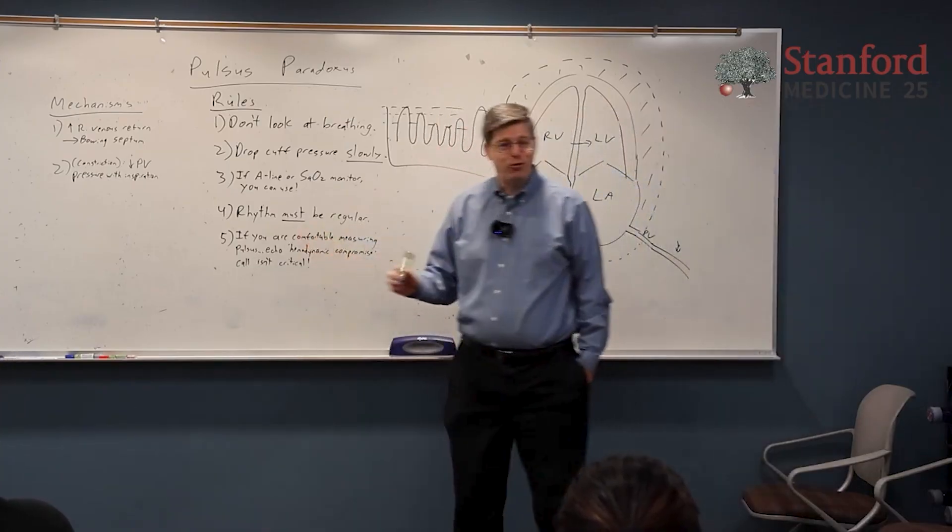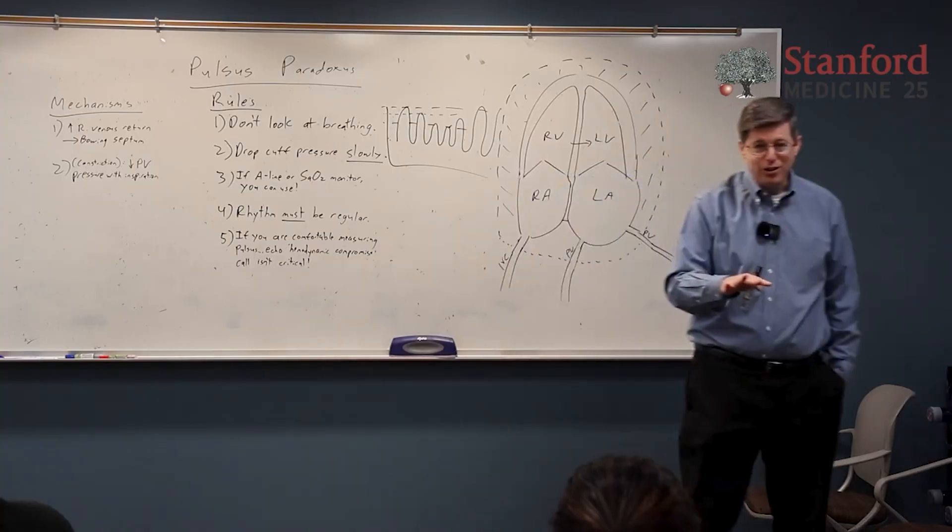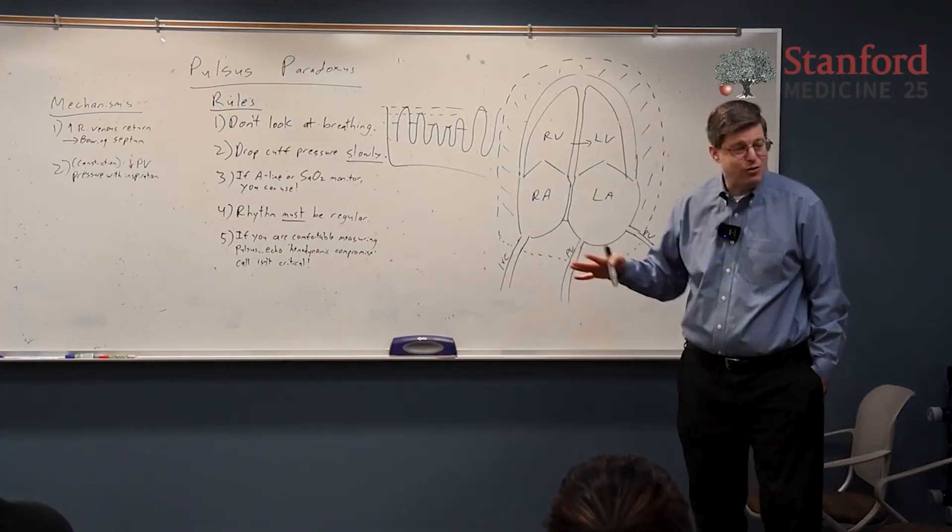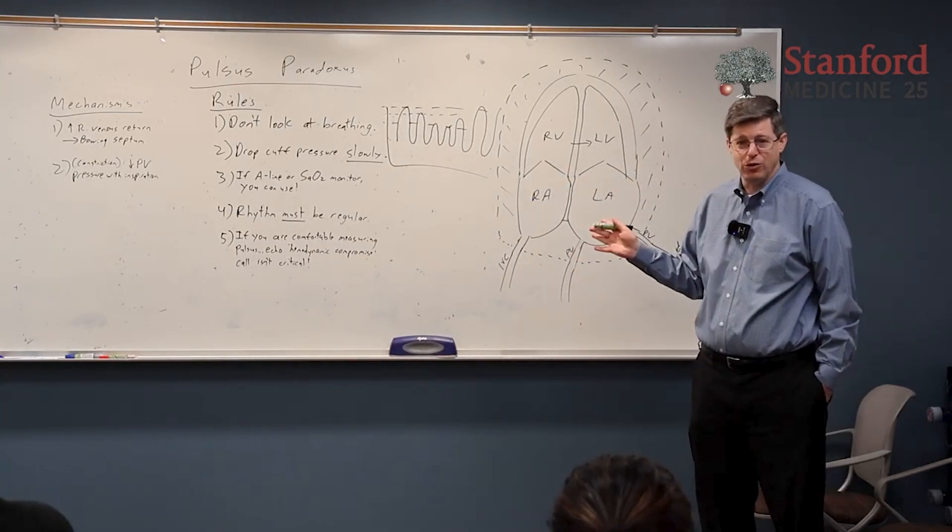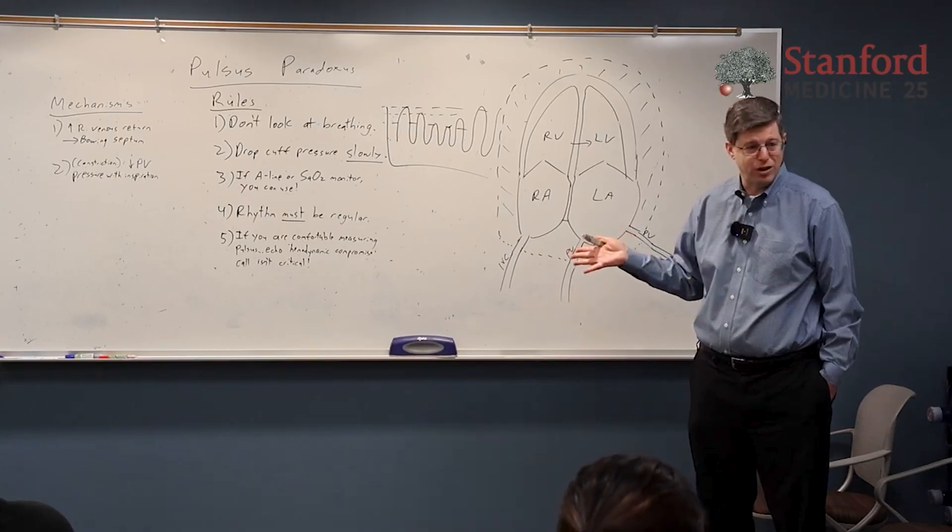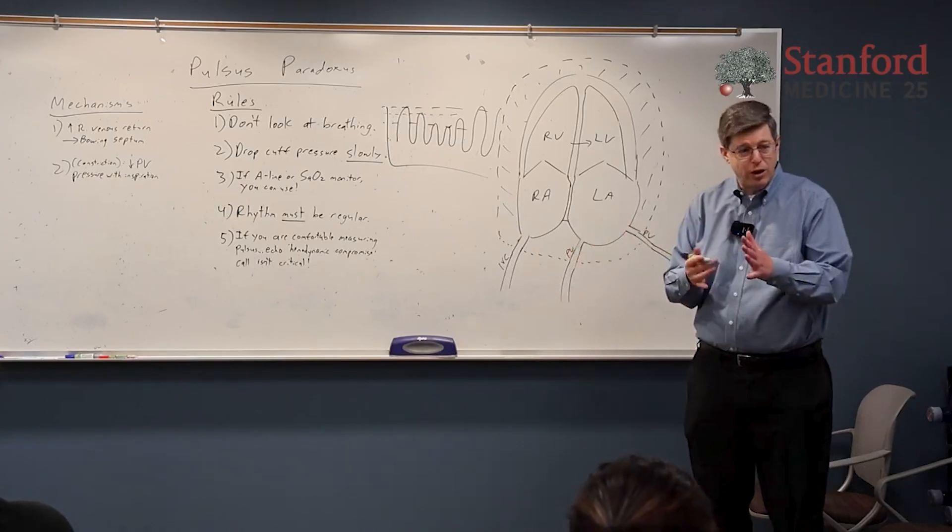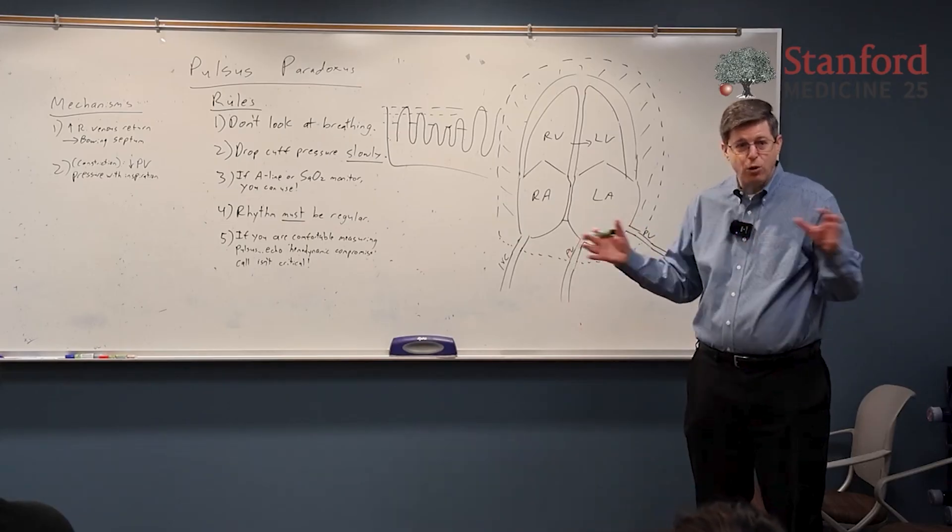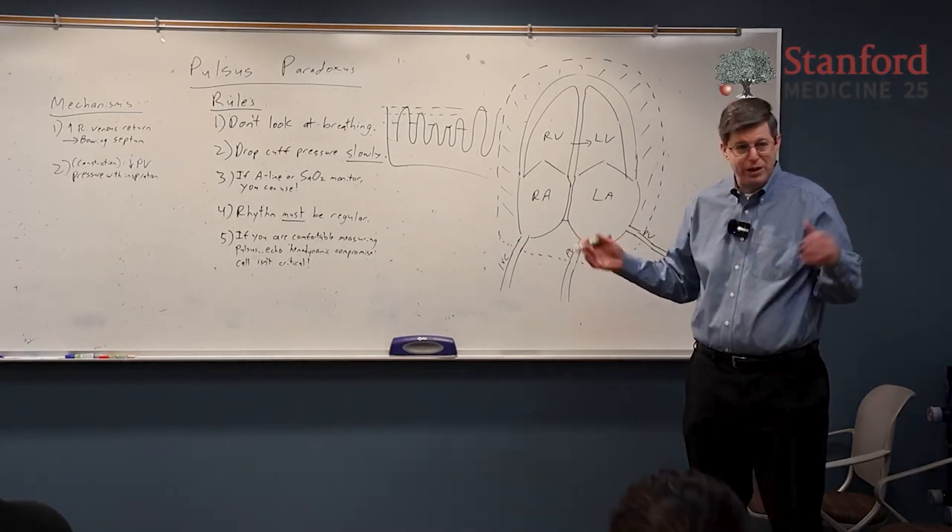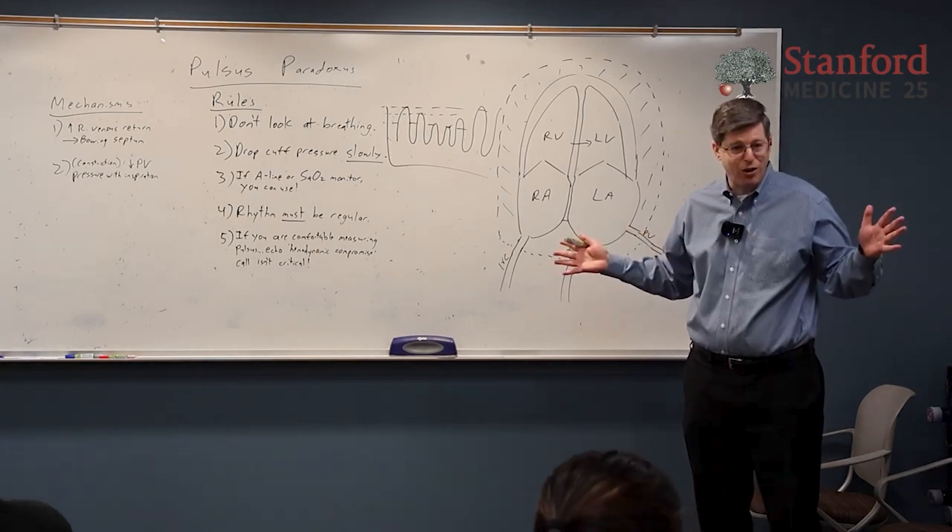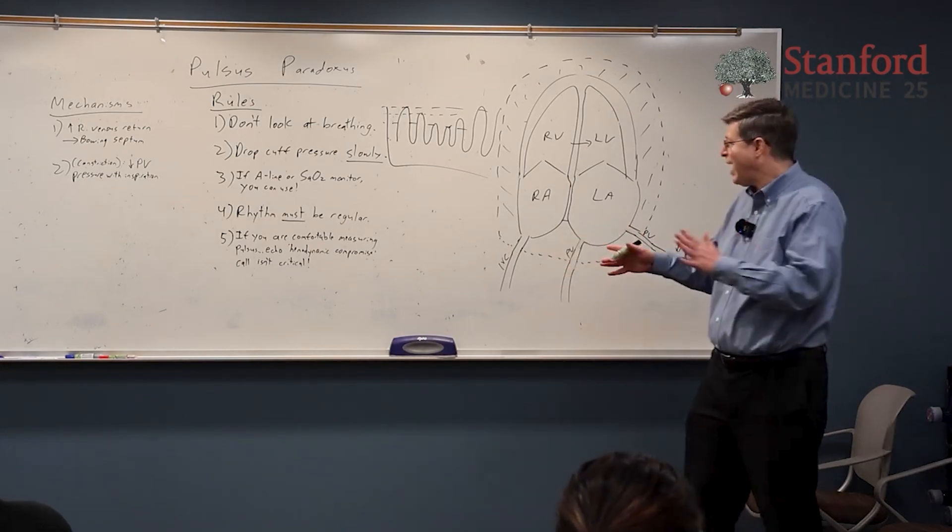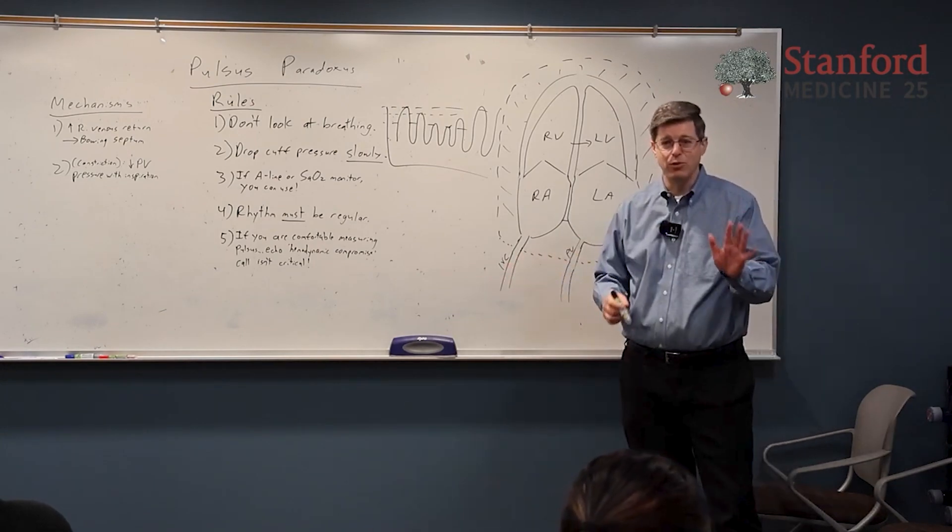Number four, the rhythm must be regular. If somebody has an irregular rhythm, they're in A-fib or they're having ectopy all over the place, forget it - this doesn't work. Because now if you have an irregular rhythm, the ventricle is going to be more or less full depending on how big the RR interval is. So you cannot measure a pulsus in somebody without a regular rhythm.